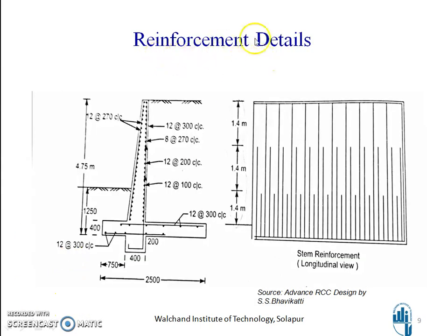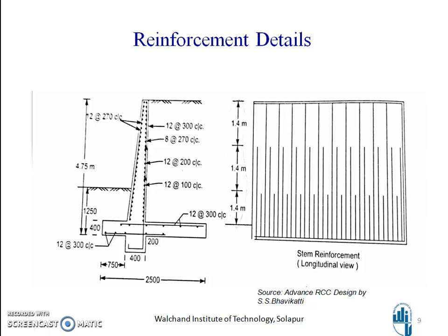This figure shows the reinforcement details, taken from Bhavikati's Advanced RCC Design. As discussed, the main steel is vertical, with a development length provided for the main steel. The projection below the base slab is called a shear key. When a cantilever retaining wall is unsafe against sliding, a shear key is provided — either at the center or at the end. Providing it at the center is more useful as it allows proper anchorage for the development length of the main steel.